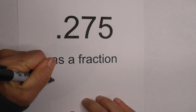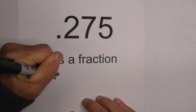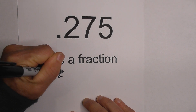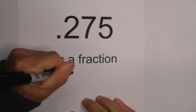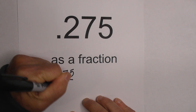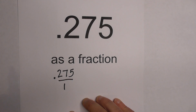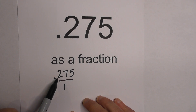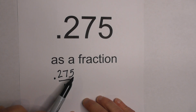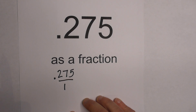So step one is I'm just going to write the decimal over one, and I kind of have a fraction, but I have a problem — I have a decimal here in the numerator.